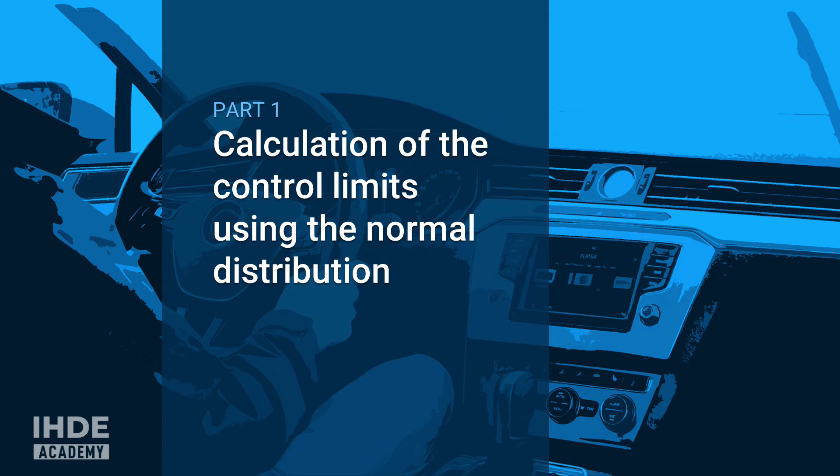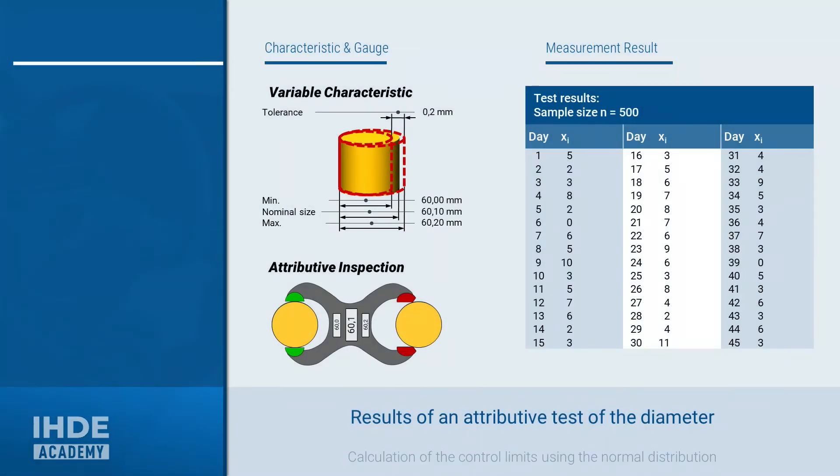Let's start with the calculation of the control limits using the normal distribution. The diameter of this piston serves as our example. Although it is a variable characteristic, it can also be checked attributively. For example, with the limit snap gauge. The test result is therefore only a statement as to whether the diameter is within the tolerance or not, just a statement of pass or fail or accepted or rejected.